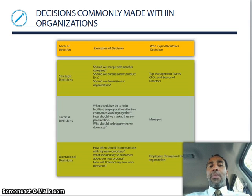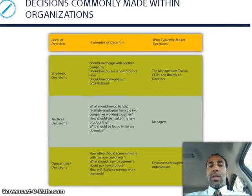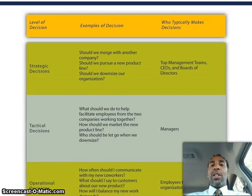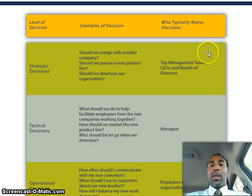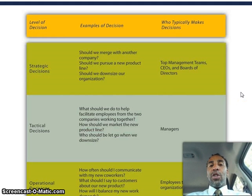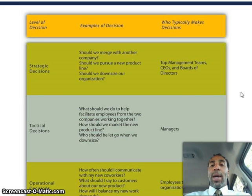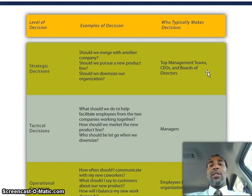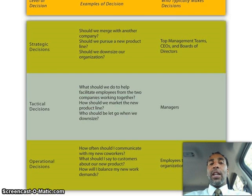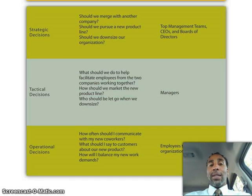Decisions commonly made within organizations — level of decision, examples of decisions, and who typically makes them. Under strategic decisions: should we merge with another company? Should we pursue a new product line? Should we downsize? Those are made by top management teams, CEOs, and boards of directors. The people at the top make those decisions because they are very tough decisions, and when you're dealing with people's lives and their livelihoods, you must be very careful.